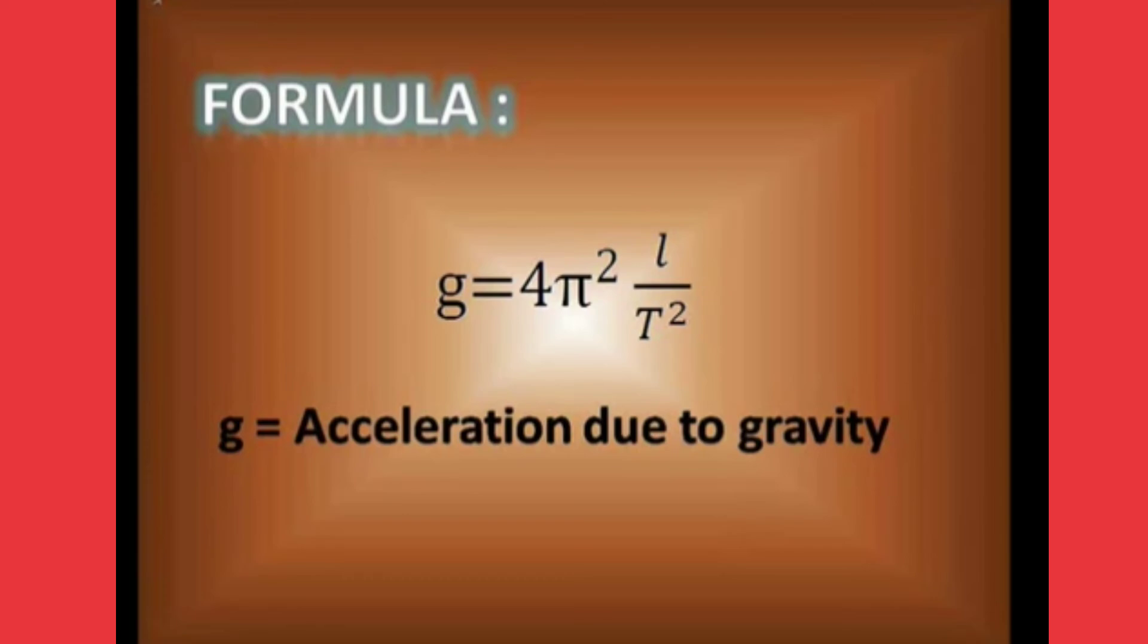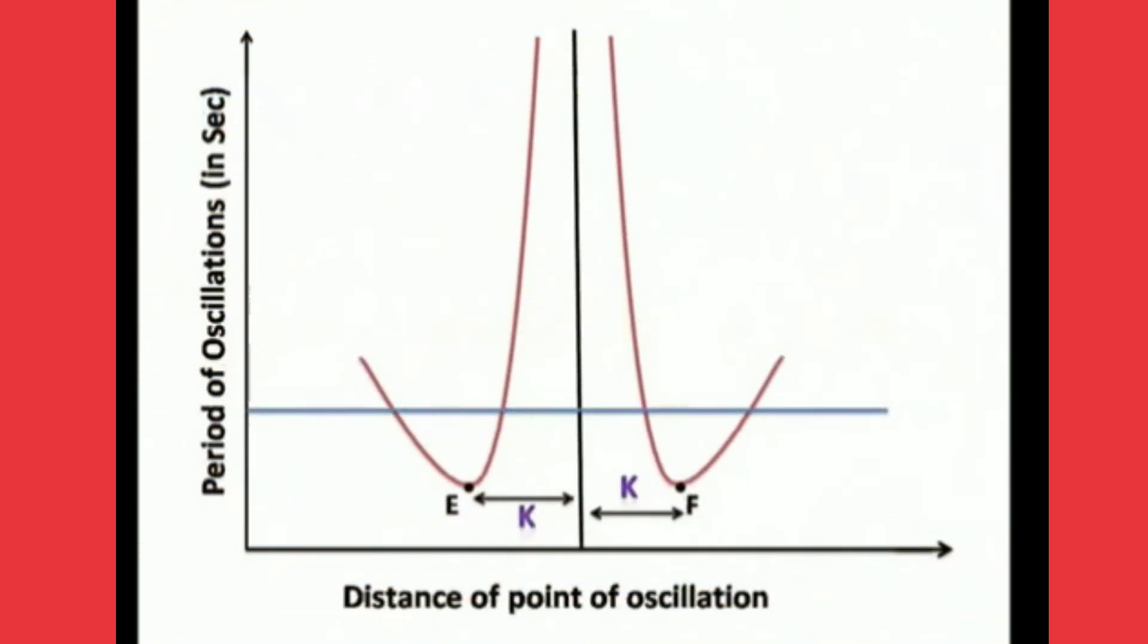Finally, that average L by T square value we need to substitute in G equals to 4 pi square L by T square formula. We will get the acceleration due to gravity. Calculate the radius of gyration using that graph formula: K equals to EF by 2.